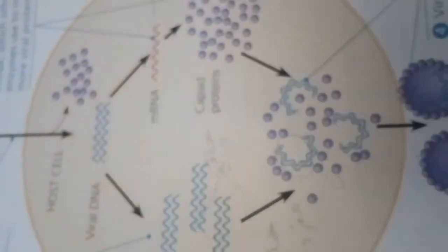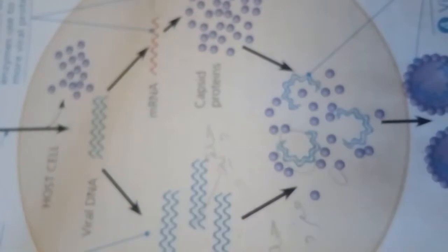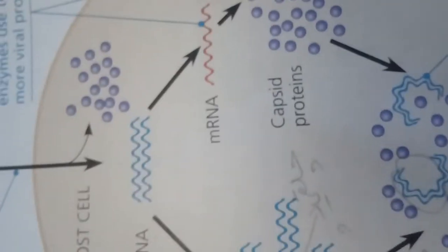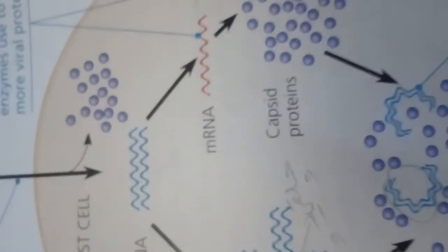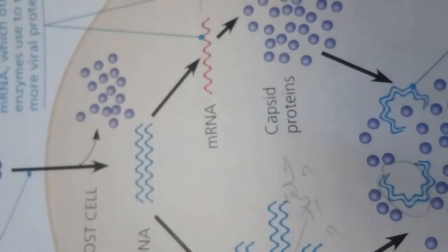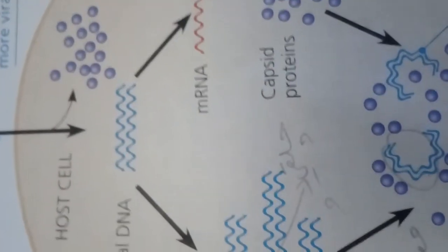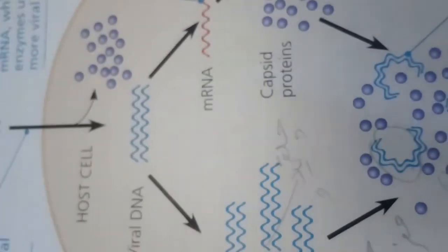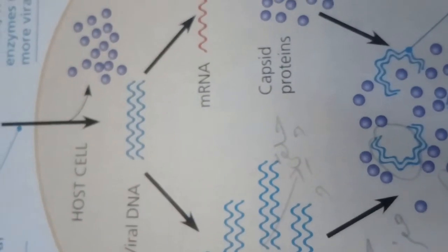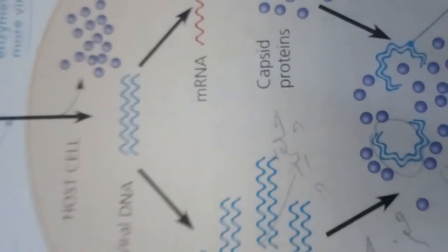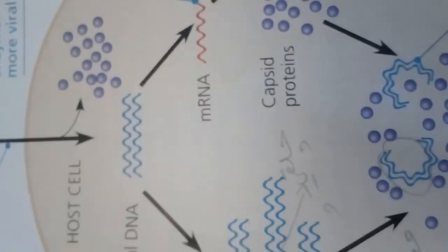The host provides the nucleotides for making viral nucleic acids, as well as enzymes, ribosomes, tRNAs, amino acids, ATP, and other components needed for making the viral proteins. Most DNA viruses use the DNA polymerases of the host cell to synthesize new genomes along the templates provided by the viral DNA. In contrast, RNA viruses use special virus-encoded polymerases that can use RNA as a template.